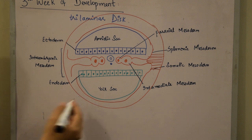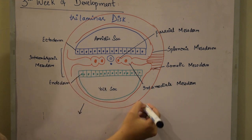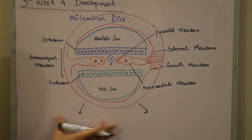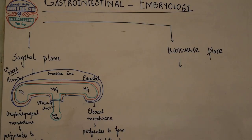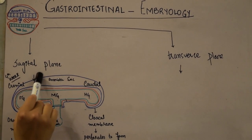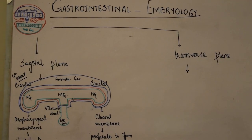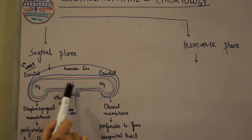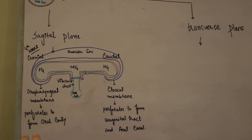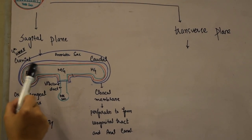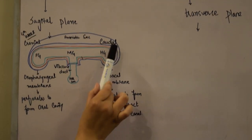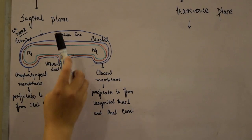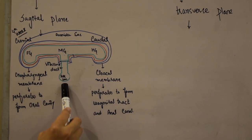The embryo then starts folding in two planes: the transverse plane and the sagittal plane. Around the fourth week of development, the endoderm expands outward and cranial and caudal ends are formed. The cranial end will form the foregut, the caudal end will form the hindgut, and in between will be the midgut.